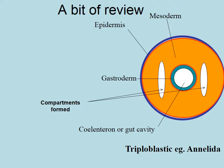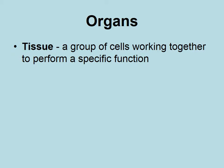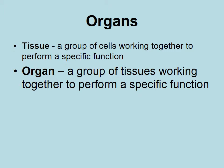These compartments allow things like circulatory systems to form, and you can develop organs. Tissues are a group of cells working together to perform a specific function. Organs are a group of tissues working together to perform a specific function, so organs are the more complex of the two. And as you're going to get bigger, you're going to develop organs.